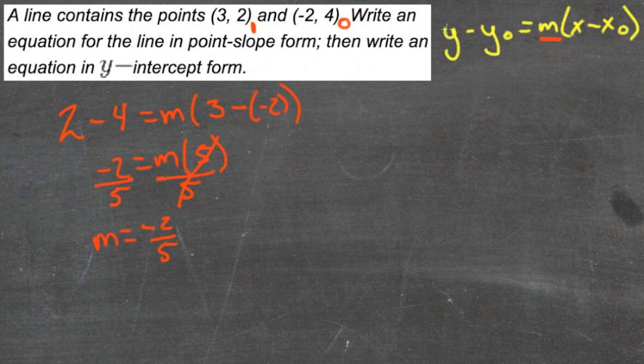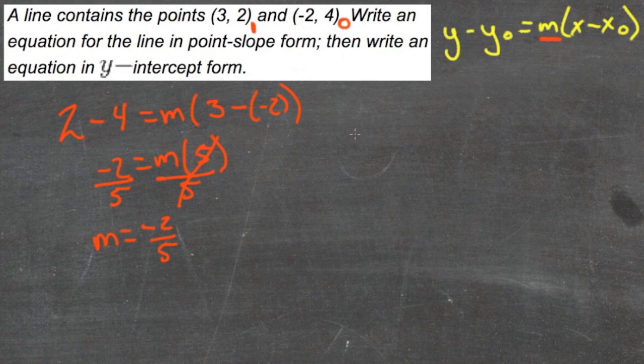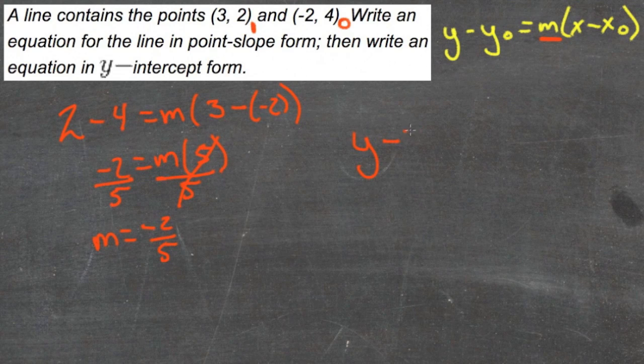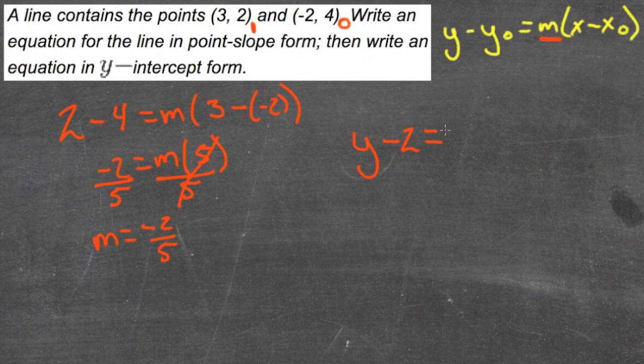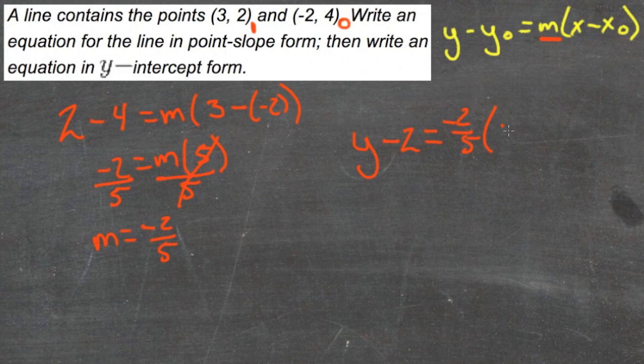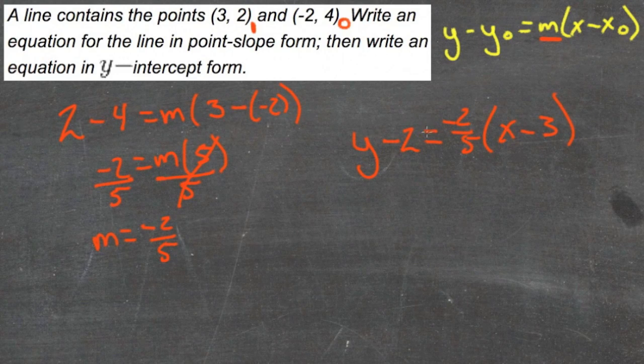So now we can use either one of our points and leave the other variable as a variable for x and y to write our equation in point-slope form. So we'll have y minus, let's use point 1, 2 equals -2/5 times x minus 3. So there's our equation in point-slope form.